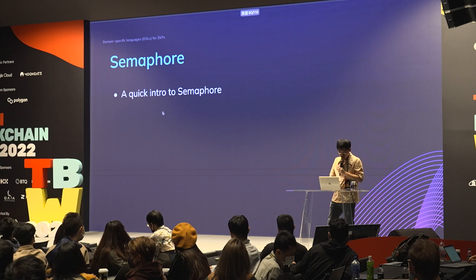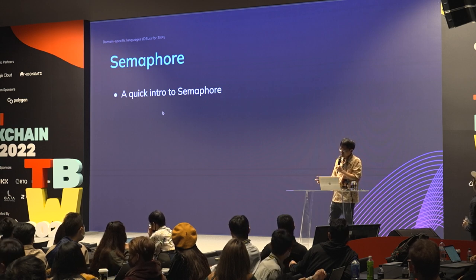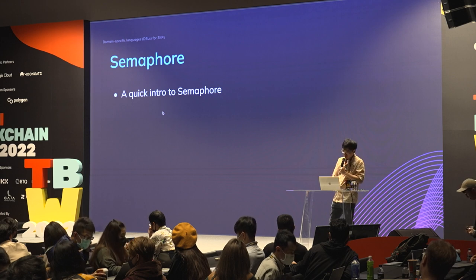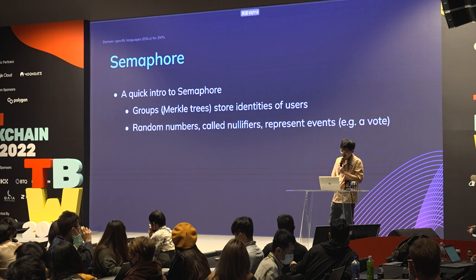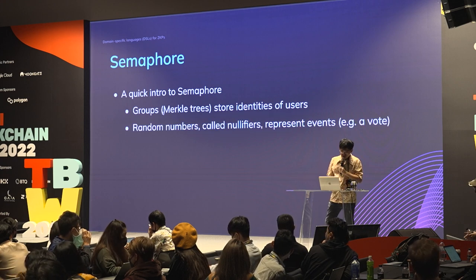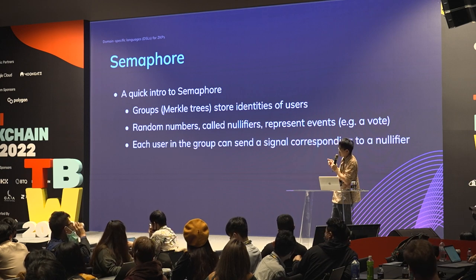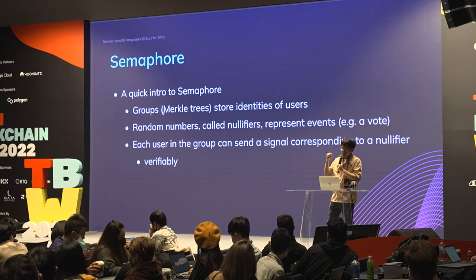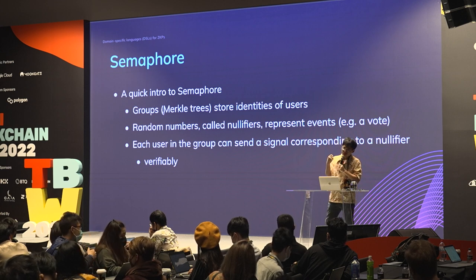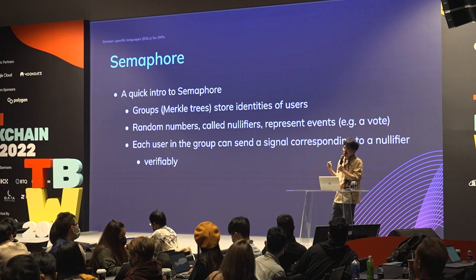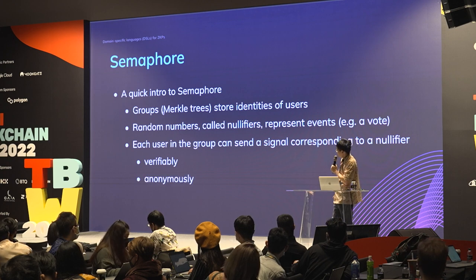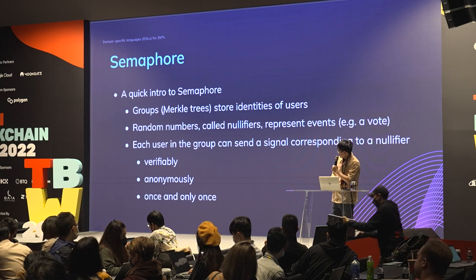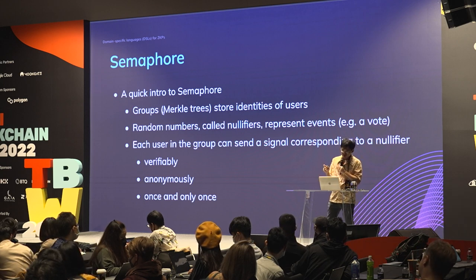A more complicated example: Semaphore is a protocol that allows groups storing user identities and nullifiers representing events like votes. This protocol allows each user in the group to send a signal corresponding to an event with several constraints: it's verifiable so anyone in the group can know the signal is from a group member, it's anonymous so nobody knows which member sent it, and a signal corresponding to an event can only be sent once.